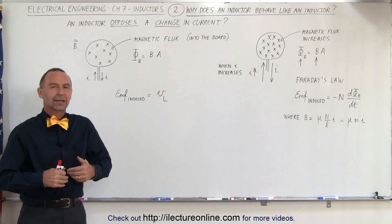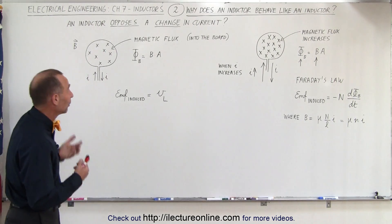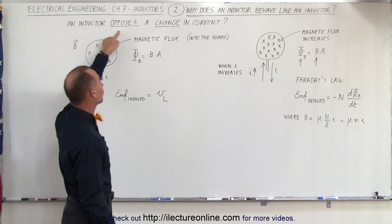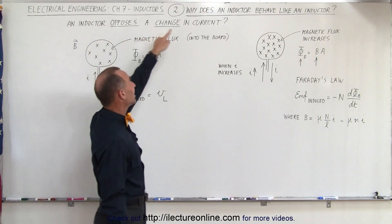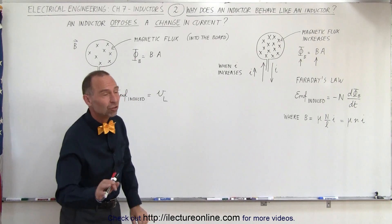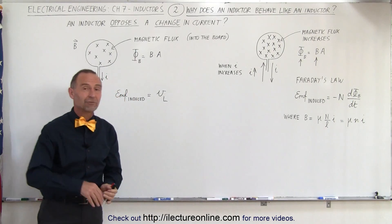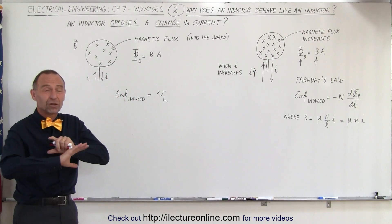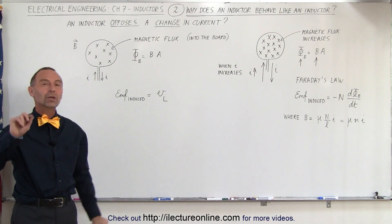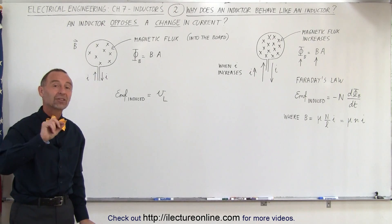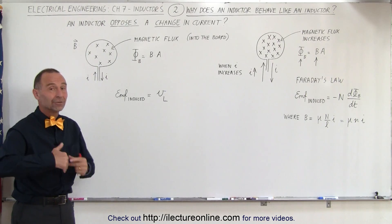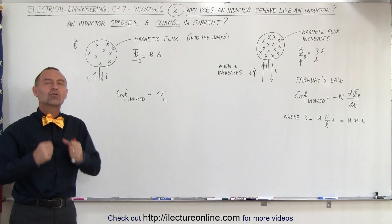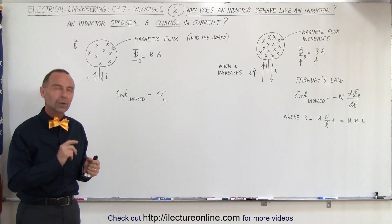What do we mean by behaving like an inductor? An inductor opposes a change in current — only the change in current. You can have current going into an inductor, and as long as it's DC current, the inductor will do absolutely nothing. Only when that current begins to change — either increase or decrease — the inductor begins to do something. The question is why.